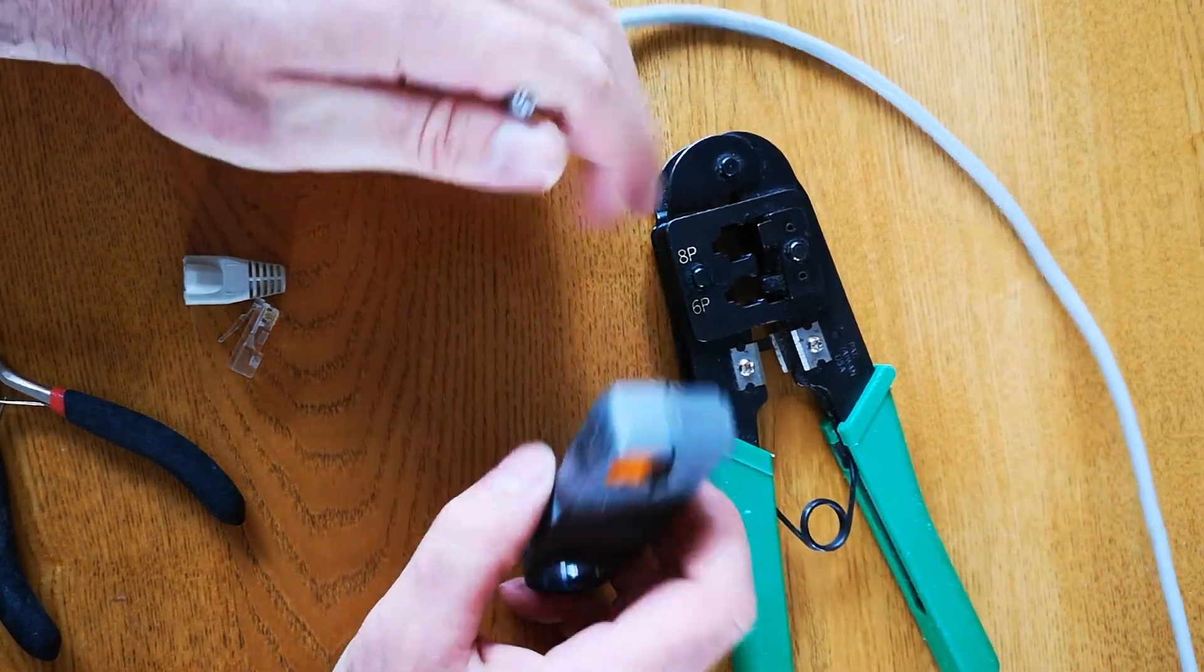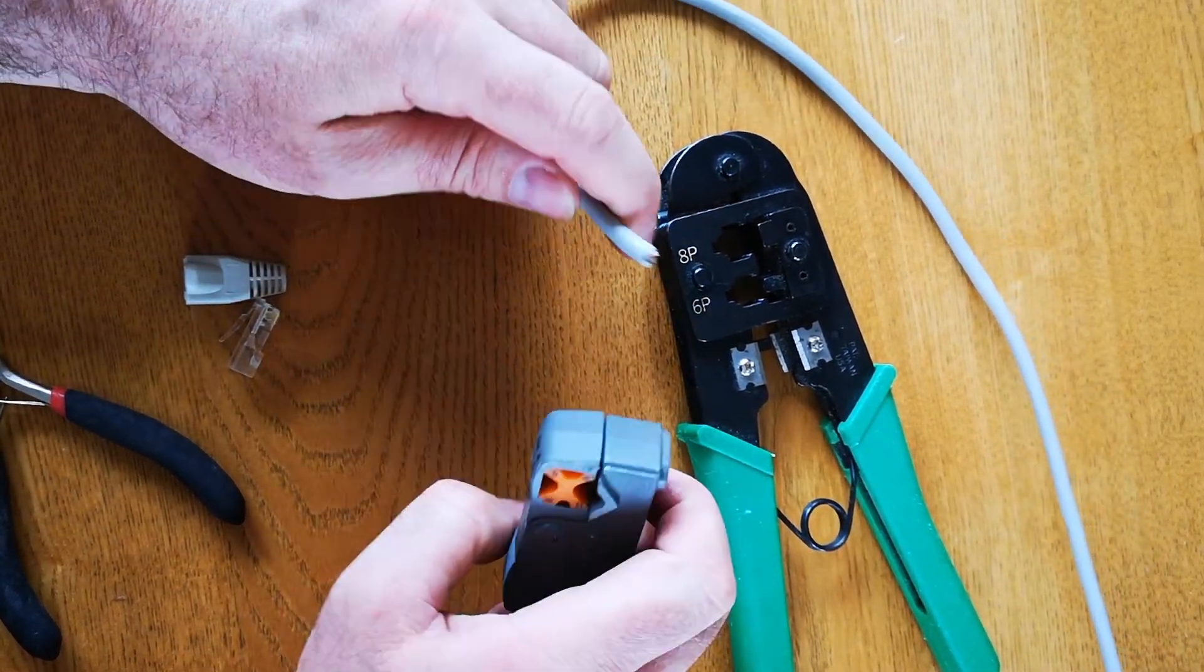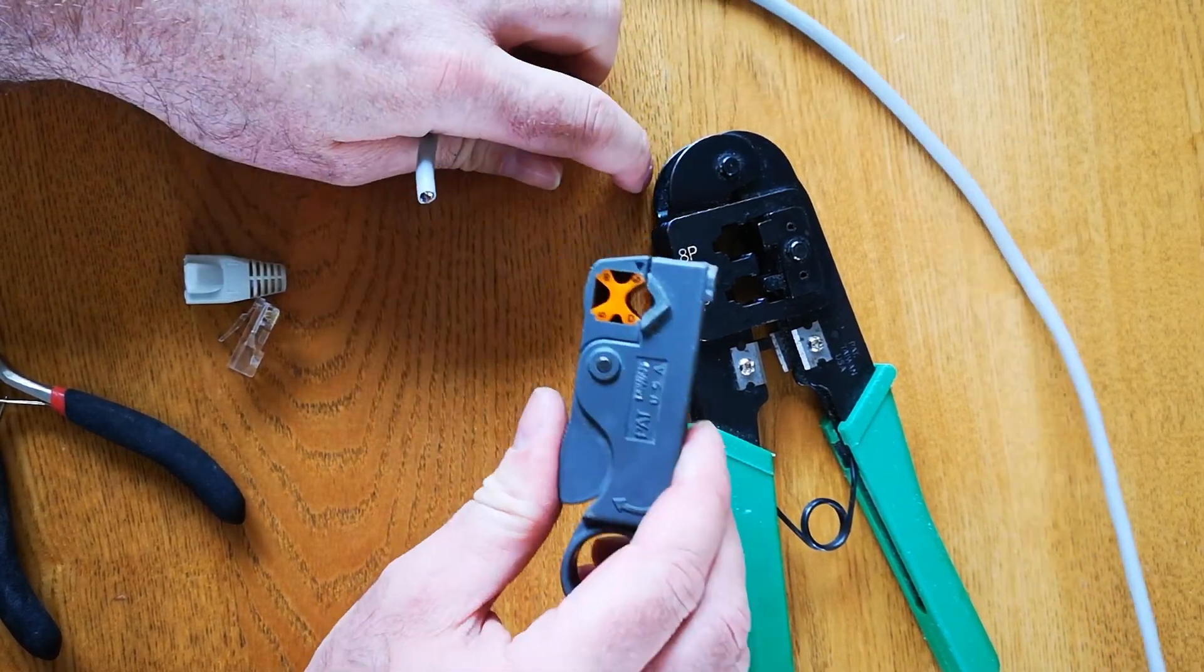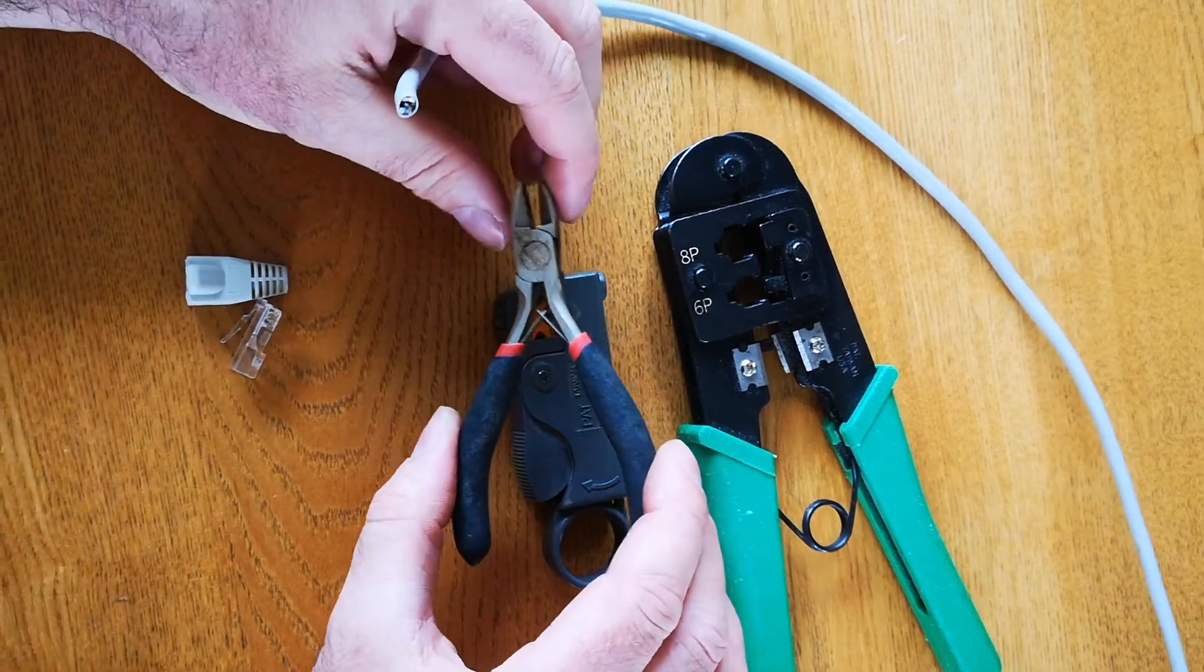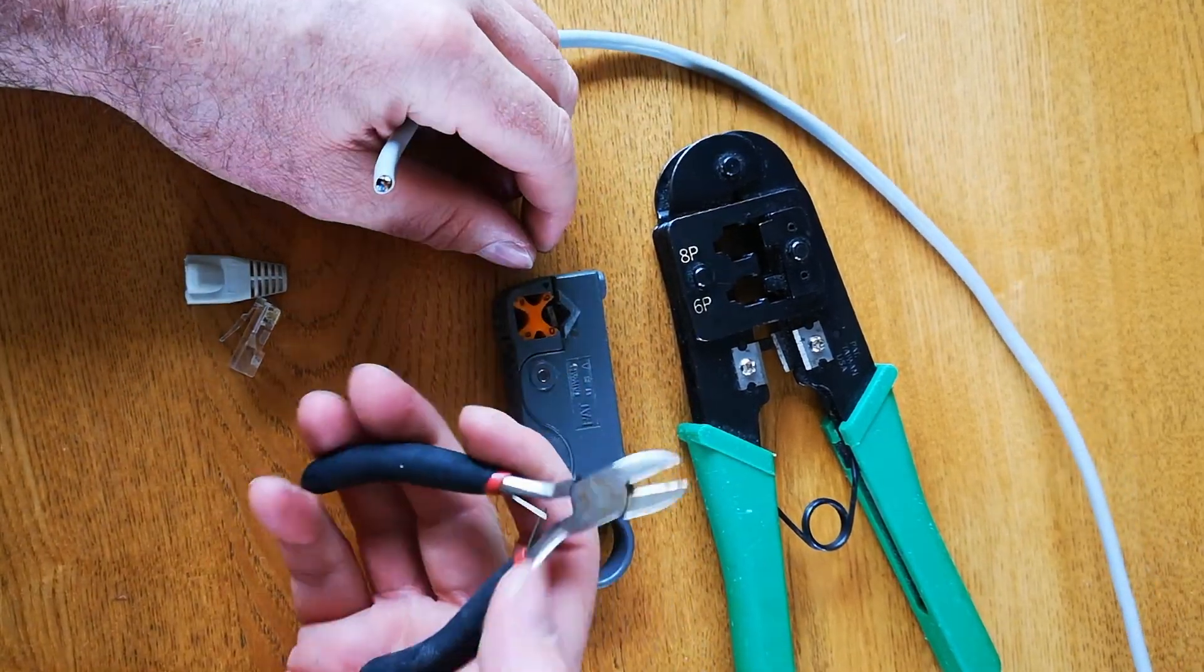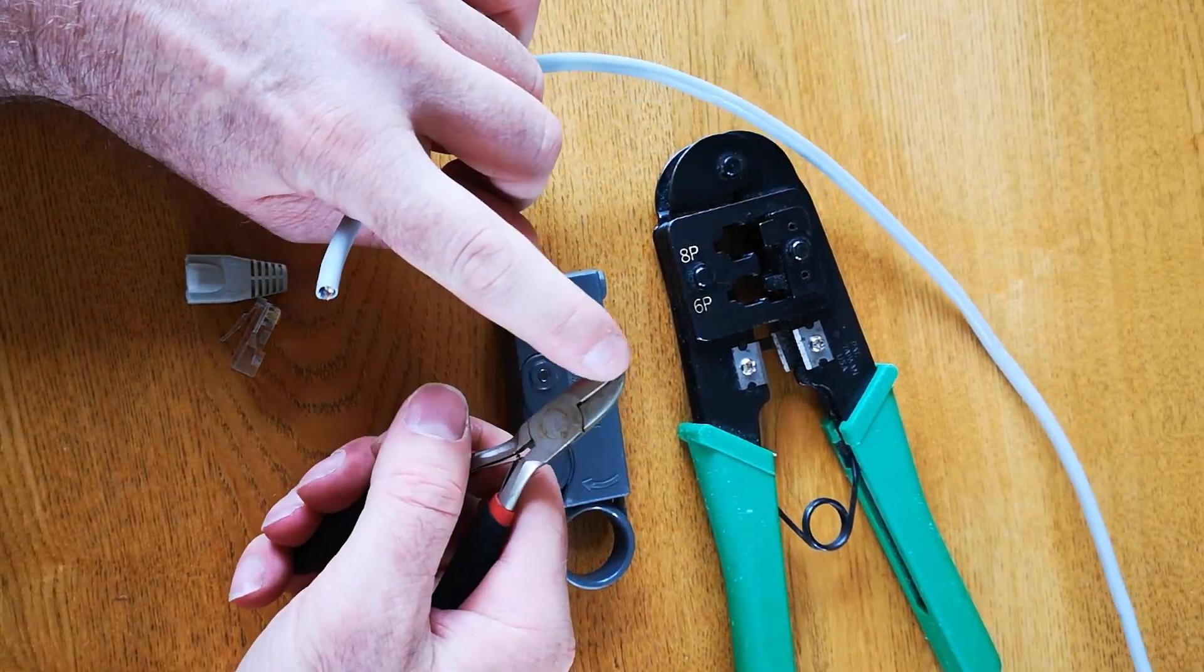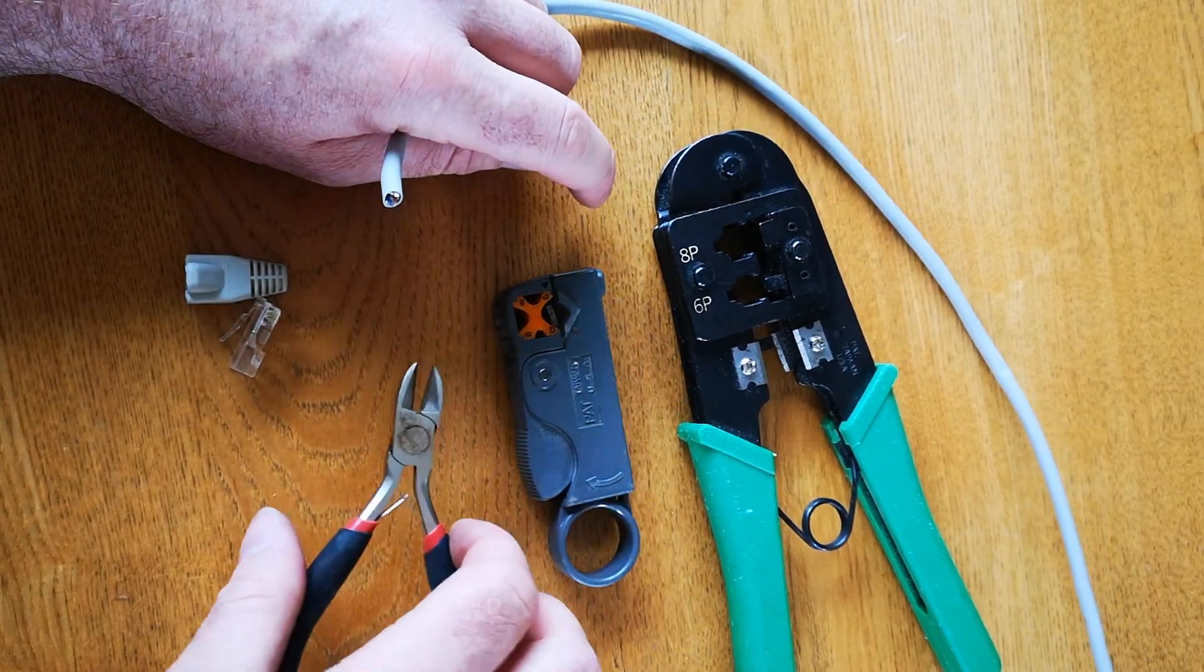Secondly, you'll need to strip the outside insulation off the Cat5 cable. This is a cable stripping tool. The last thing you'll need are a small pair of side cutters. Fine ones that come together well, not big pliers.